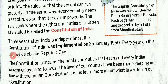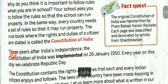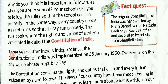Fact quest: The original Constitution of India was handwritten by Prem Bihari Rai Zadda. Each paper was beautified and decorated by artists from Shanti Niketan. Shanti Niketan is in West Bengal, in Bolpur, and it is the place where Rabindranath Tagore had established the university.